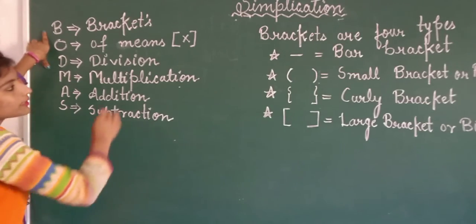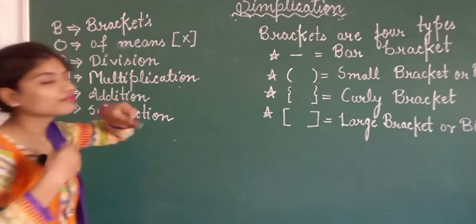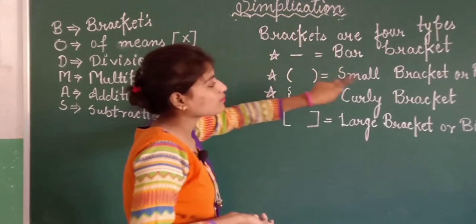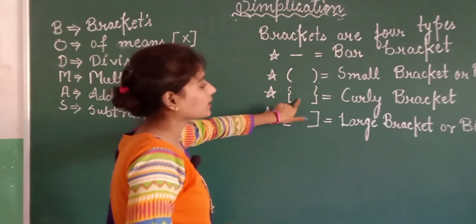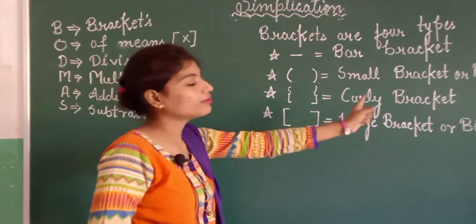So aapko pata chal gaya brackets 4 types kyu hote hain. We will repeat: bar bracket, small bracket or round bracket, curly bracket, large or big bracket.